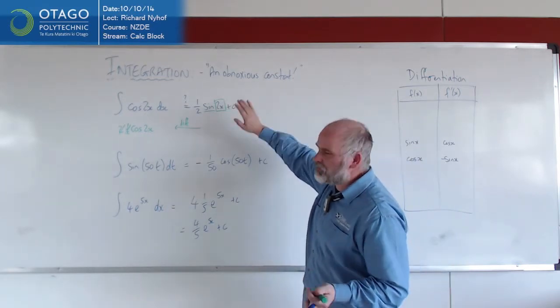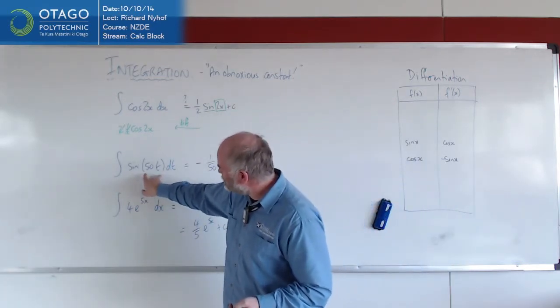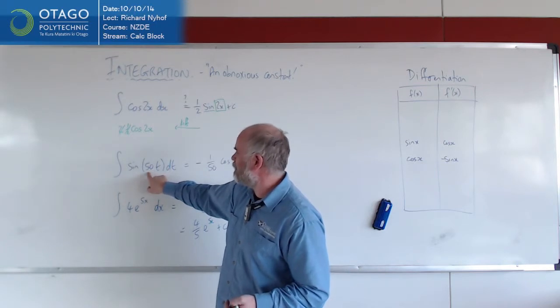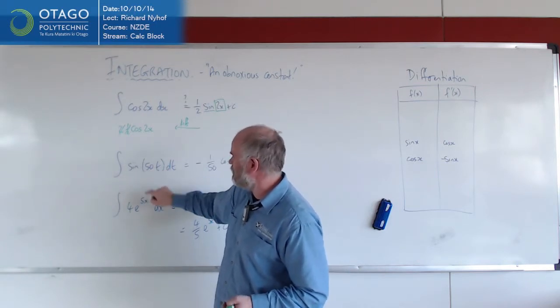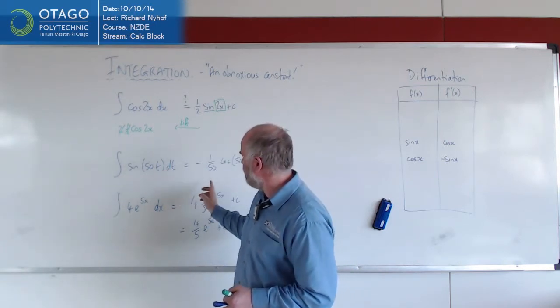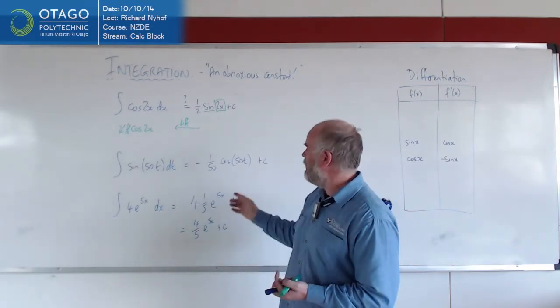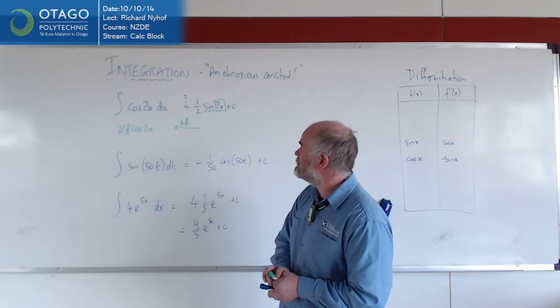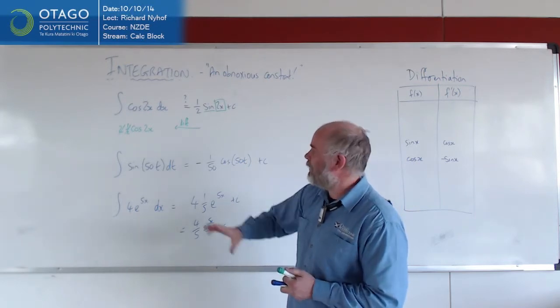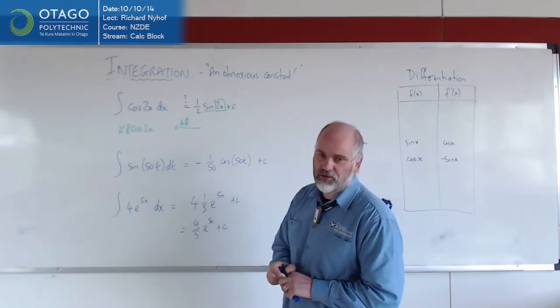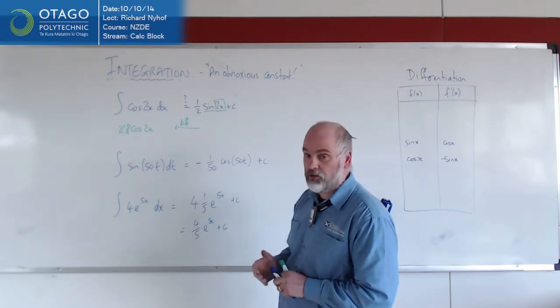So it's dealing with this, I call it an obnoxious constant, but it's a constant inside the function, constant of multiplication inside the function that you're trying to deal with. You bring it out the front as 1 over that constant, and basically it undoes the chain rule going backwards. Just a little trick that means that you can do a whole bunch of things that look like that reasonably easily, and there will be quite a few that look like that.